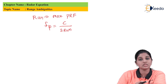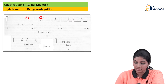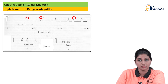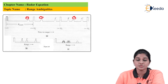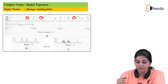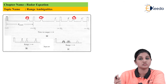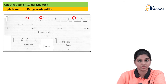Let's consider one waveform to understand the concept properly. We consider three targets: target A, target B, and target C. Target A is present within the unambiguous range. Target B is present at a range greater than Run but less than 2*Run, whereas target C is present at a range more than 2*Run but less than 3*Run. The range value provided by target A is a true range, whereas the range values provided by B and C are called second time around echo or multiple time around echo.